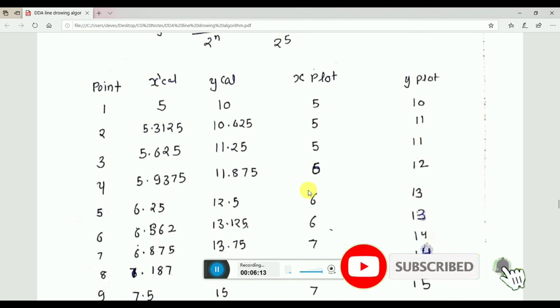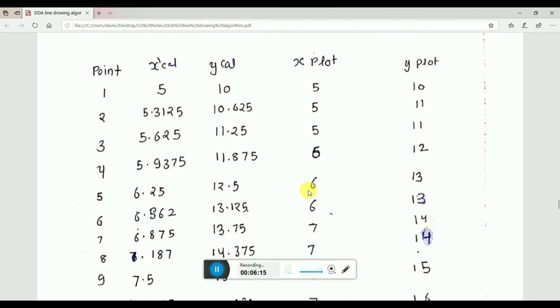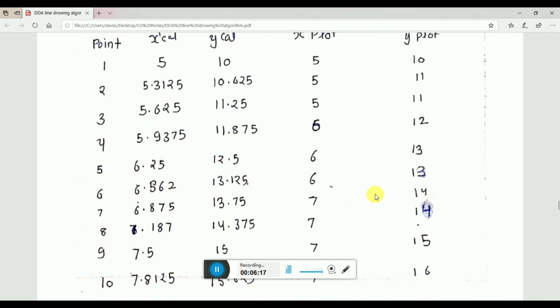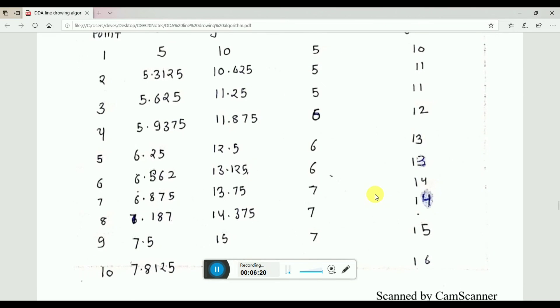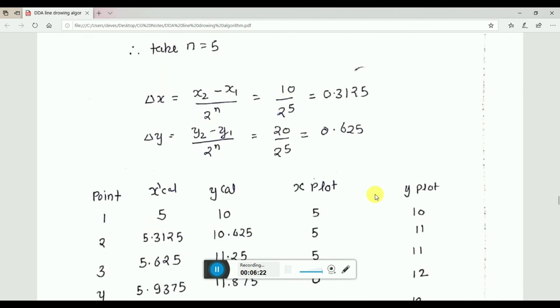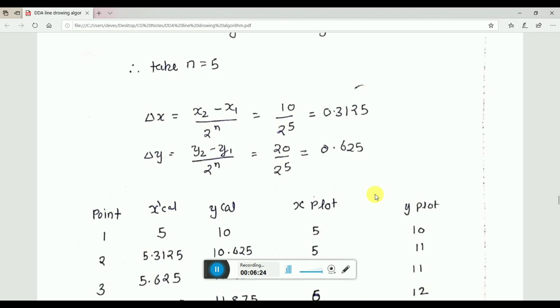Similarly you will proceed with this and you will get the plotting coordinates of that particular line. So this is the example of your symmetrical DDA. This is a very small algorithm. Thanks for watching my video and don't forget to subscribe my channel. Thank you very much.